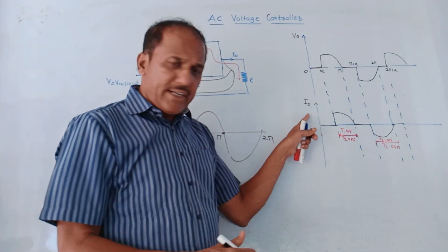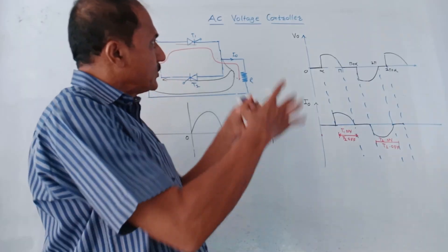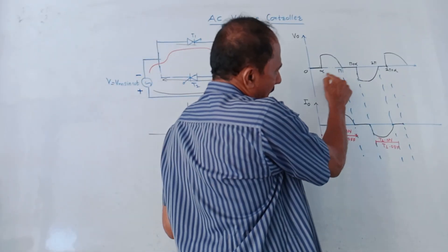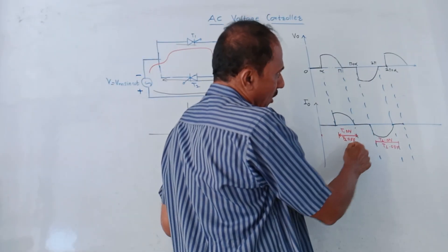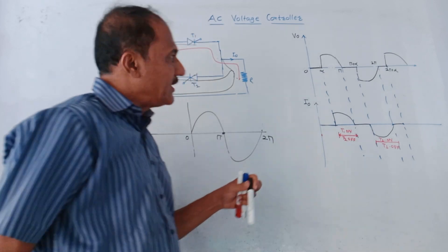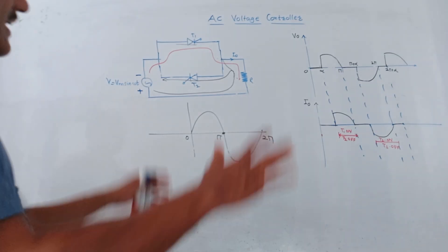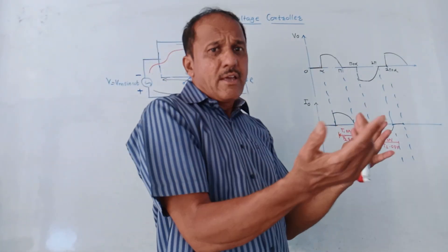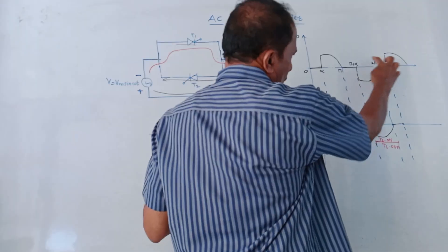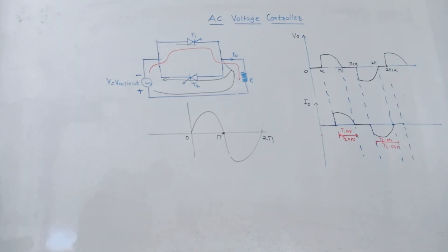Likewise the cycle repeats, and a similar waveform is obtained for output current — the amplitude is reduced since current equals voltage divided by resistance. To summarize: from alpha to π, T1 is on and T2 is off; from π + alpha to 2π, T2 is on and T1 is off. In the case of a half wave controller, only one SCR is used and only positive waveforms are obtained.